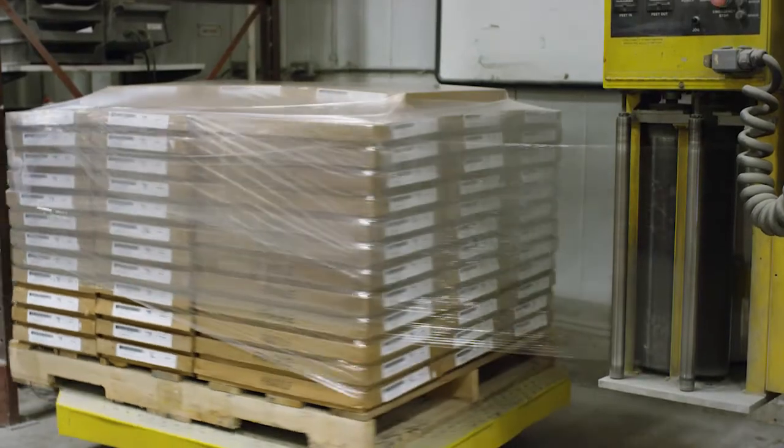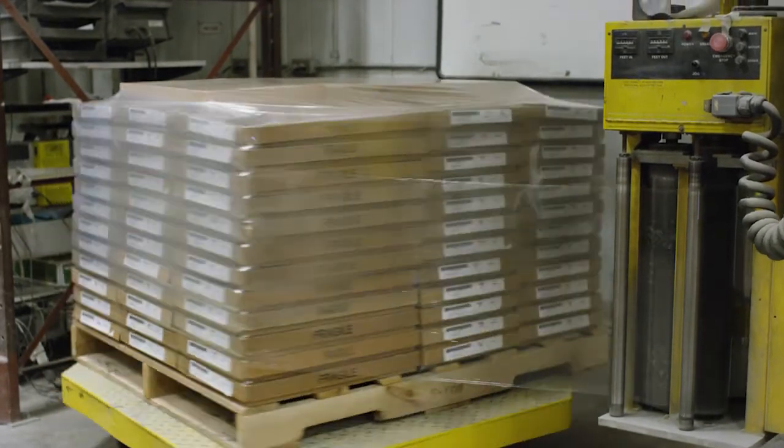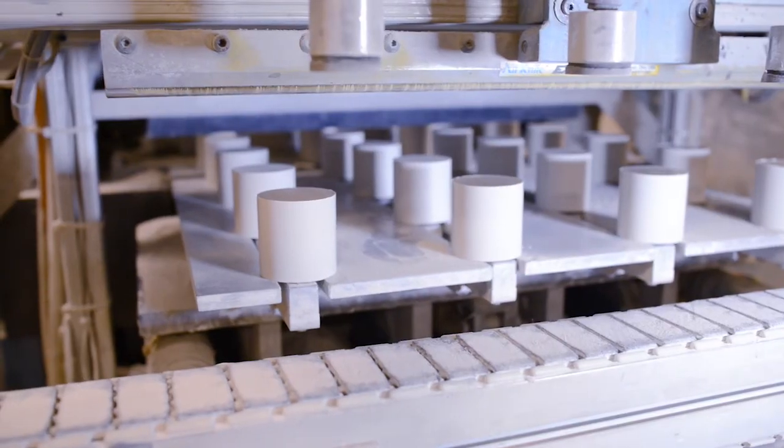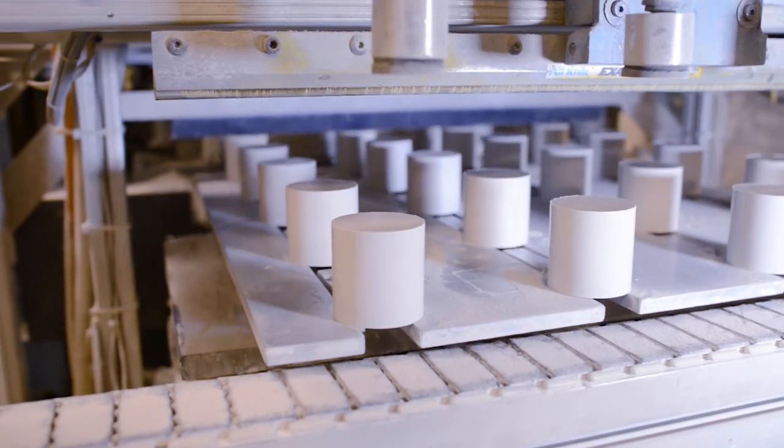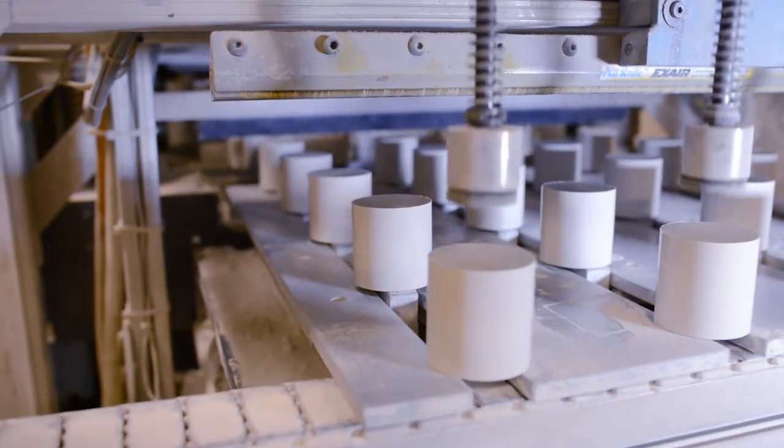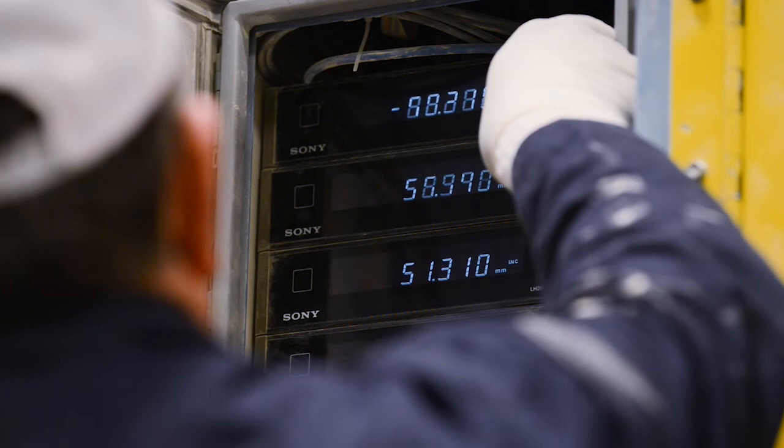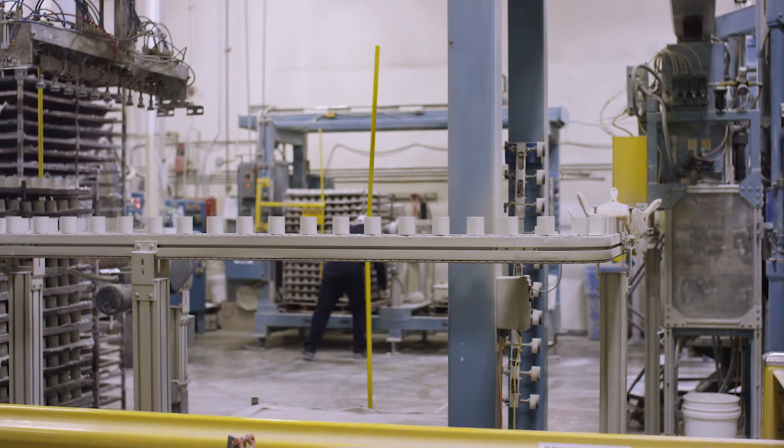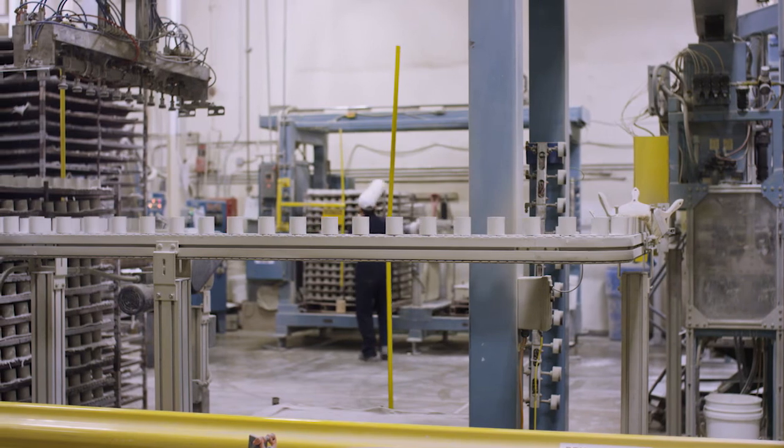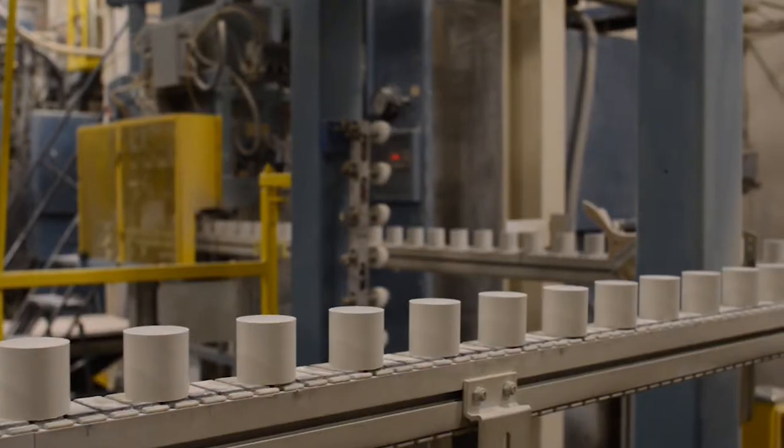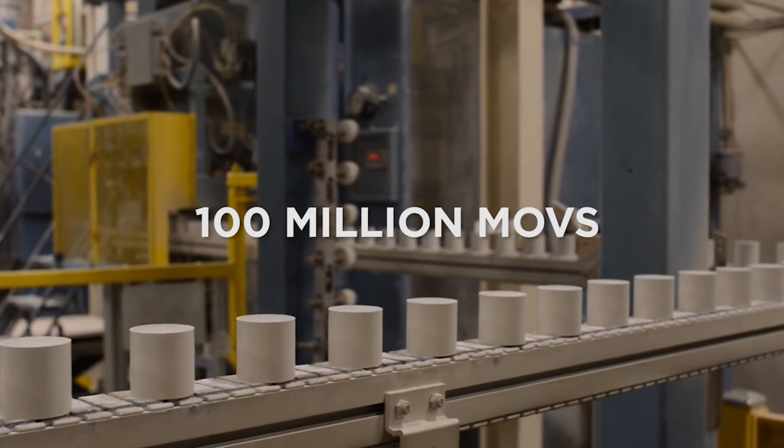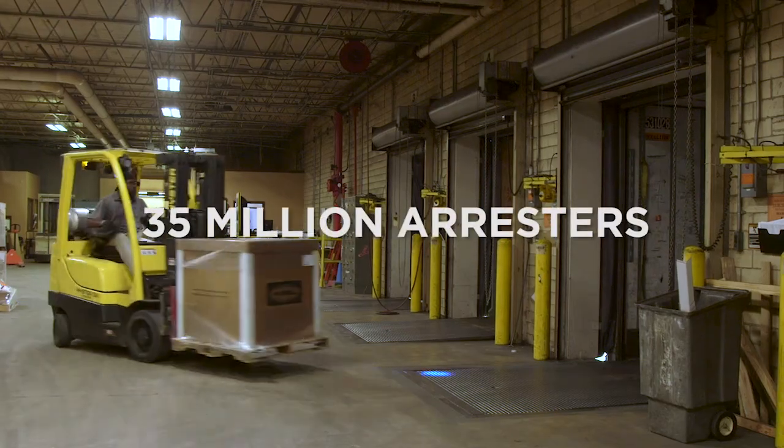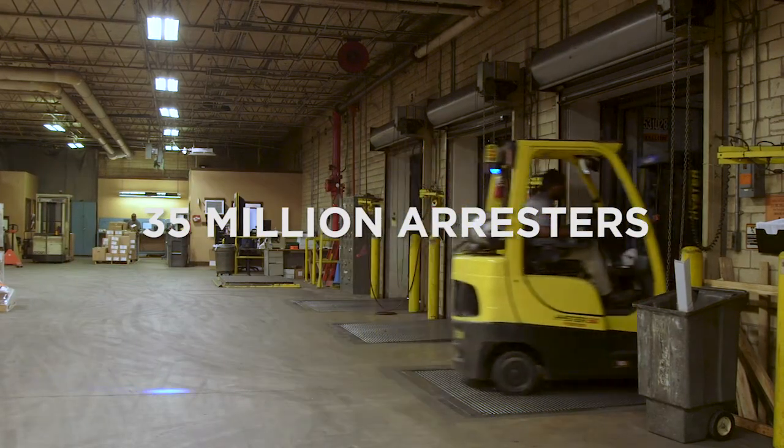Once the quality of the MOVs has been assured, the shipment of the finished product is scheduled. Producing MOVs is a core competency that Hubble supports with a large capital investment and a dedicated team of technical experts. Hubble is currently the largest manufacturer of high-voltage arrestors in this country. To date, we have manufactured over 100 million MOV discs installed into over 35 million surge arrestors.